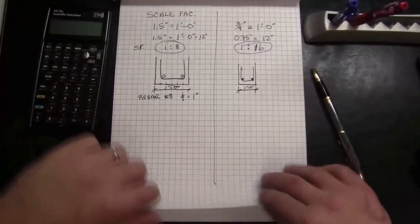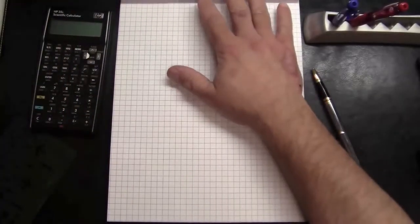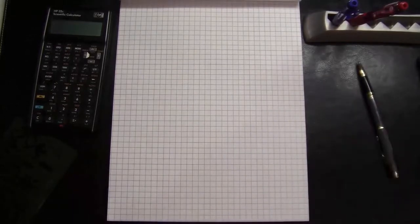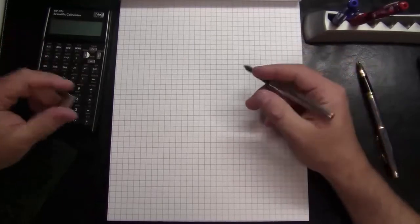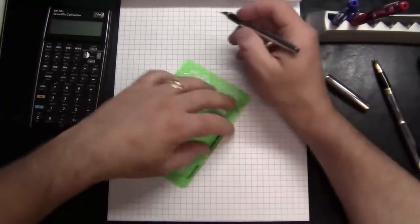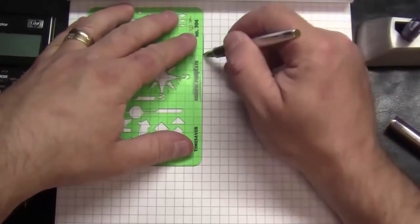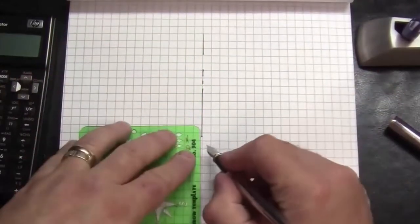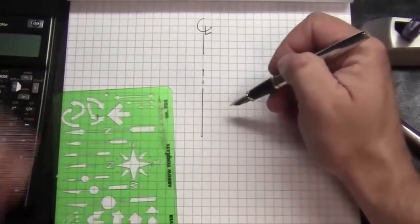I'm going to look at working with a column base plate example. Working in this area, it can be helpful to begin by starting with a centerline. This would simply be the centerline of the column.